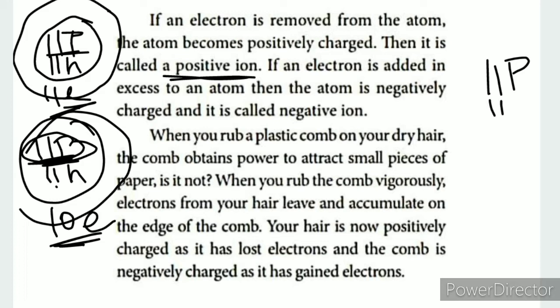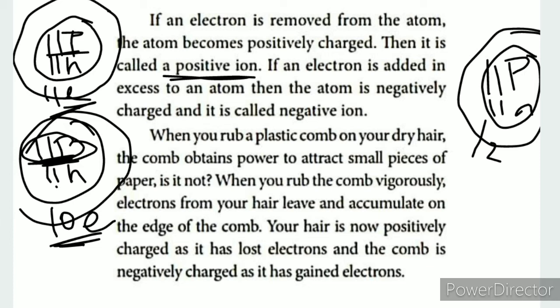Conversely, when an extra electron is added to an atom that originally had 11 protons and 11 electrons, it now has 12 electrons. Since electrons outnumber protons, there is a net negative charge - making it a negative ion.